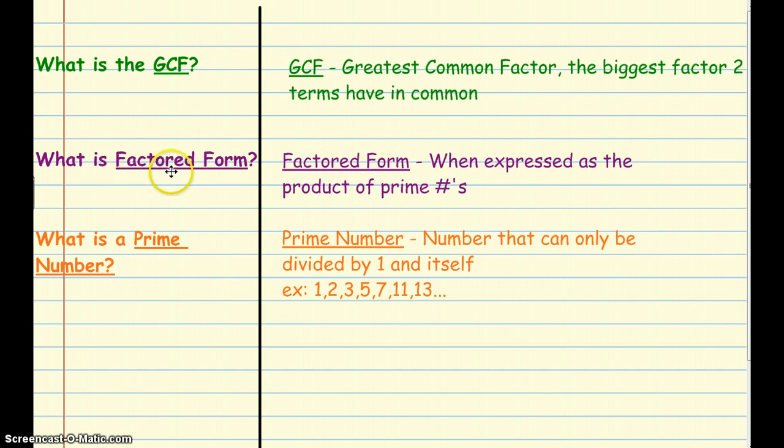The next one is, what is factored form? Factored form is when it's expressed as the product, product meaning when we multiply, the product of prime numbers. Well, what is a prime number? A prime number is a number that can only be divided by one and itself. Here's a whole list of prime numbers. If we were to break them down, the only way to get them would be to be one times whatever their number is.